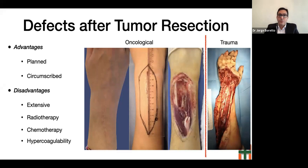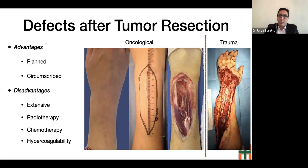There are some differences between the defects produced by tumor resection and those produced by trauma. In the first group, the defects are most of the time preoperatively planned and circumscribed, which is an advantage. However, depending on the tumor, some patients receive radio- or chemotherapy, which can affect the result of the reconstruction, as well as the hypercoagulability state of these patients. In contrast, defects produced by trauma are surrounded by tissues that suffered blunt trauma and can affect the recipient vessels of a free flap or the pedicle of a local flap.